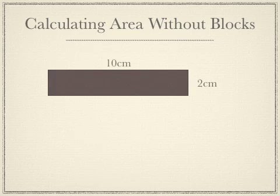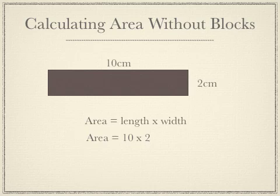To find the area of this rectangle, it's just going to be the length times the width. In this rectangle, the length is 10 and the width is 2. So we'll multiply 10 times 2. 10 times 2 is 20.